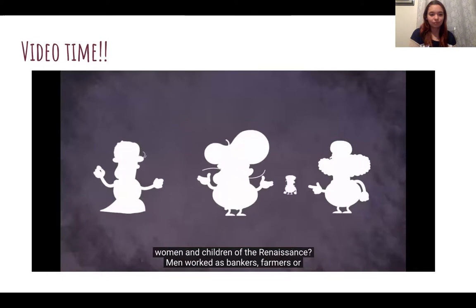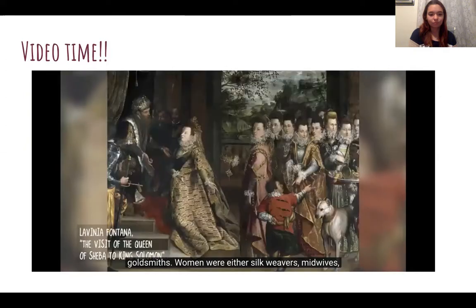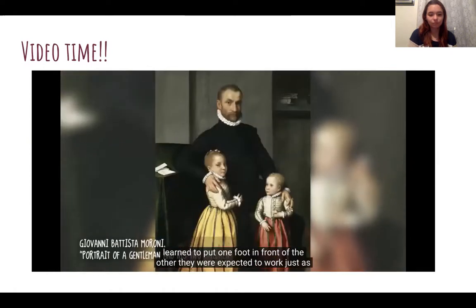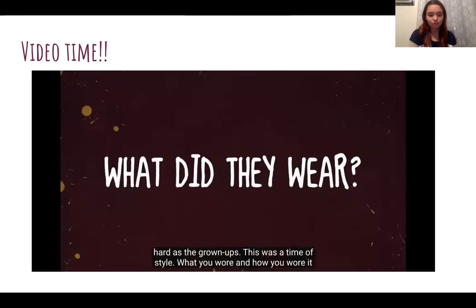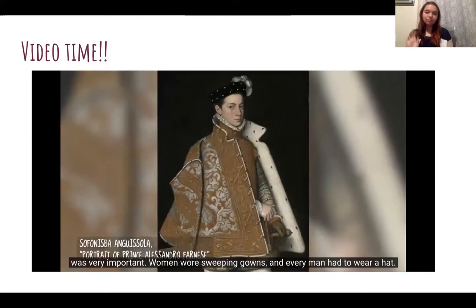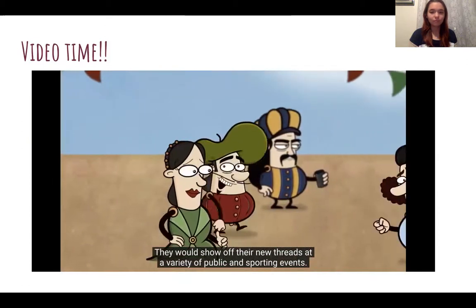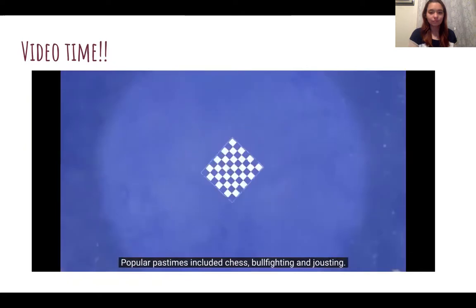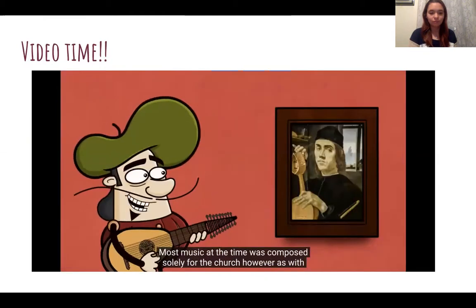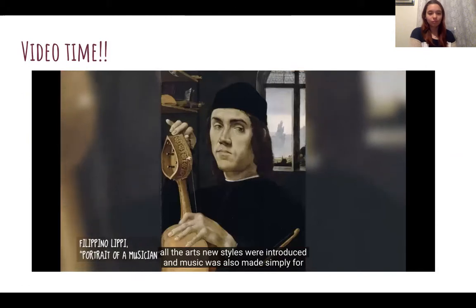What was life like for the men, women, and children of the Renaissance? Men worked as bankers, farmers, or goldsmiths. Women were either silk weavers, midwives, seamstresses, or nuns. Children didn't have it easy either — from the time they learned to walk, they were expected to work just as hard as the grown-ups. This was a time of style. Women wore sweeping gowns and every man had to wear a hat. Popular pastimes included chess, bullfighting, and jousting. Most music at the time was composed for the church, but new styles were introduced and music was also made for people's entertainment.